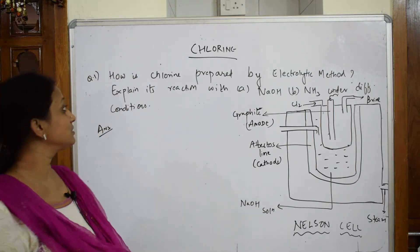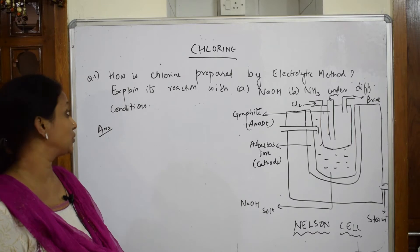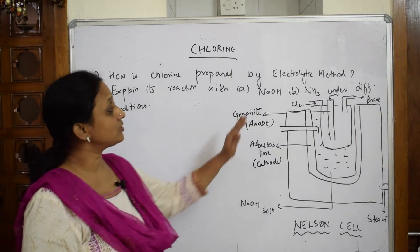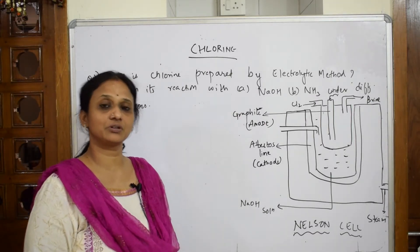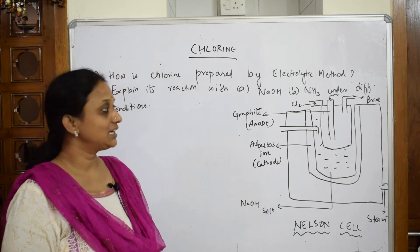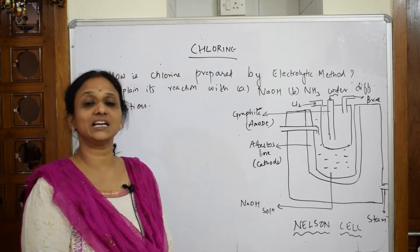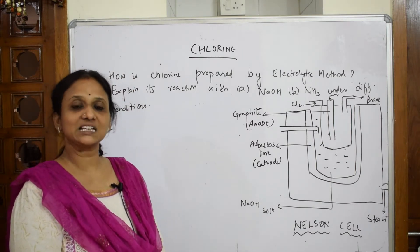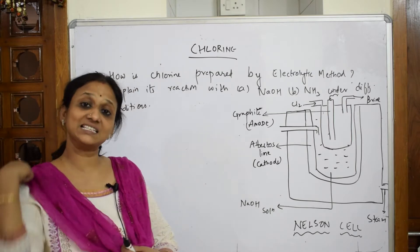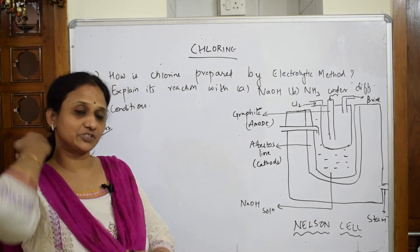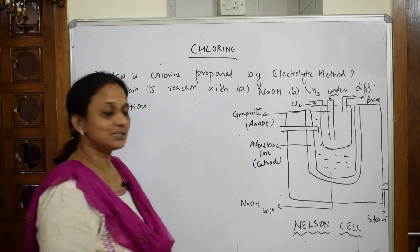They've asked how chlorine is prepared by the electrolytic method. Important questions include the reaction with sodium hydroxide and with ammonia under different conditions. For preparation of chlorine by electrolytic method, the cell we use is the Nelson cell, which you have also studied in Grade 11.